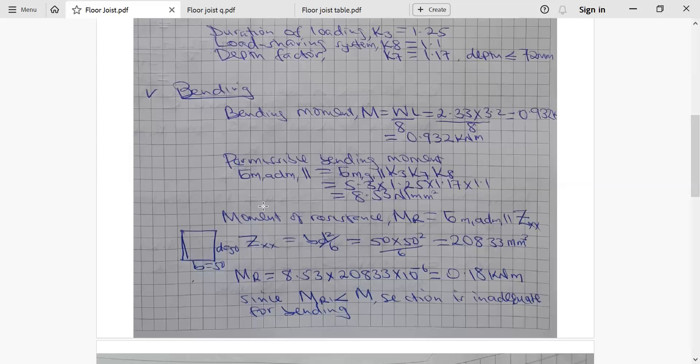Then we go to moment of resistance MR. MR means the value the section is resisting the applied moment. You take the permissible bending moment and multiply by the section modulus along XX, which is ZXX. We can calculate it by taking BD squared over 6. If we substitute 50 times 50 squared over 6, you get 20,833 millimeter cubed. Our moment of resistance will be 0.18 kilonewton meter. This implies the section can resist up to 0.18 kilonewton meter, and we are subjecting it to 0.932 kilonewton meter, meaning the section will fail.